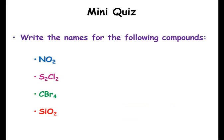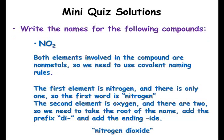Go ahead and try naming these compounds. First one: nitrogen and oxygen — both nonmetals, so we use covalent naming rules. The first element is nitrogen with only one, so the first word is simply 'nitrogen'. The second element is oxygen with two, so we take the root, add 'di' for two and the ending '-ide', and we get nitrogen dioxide.